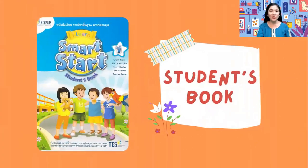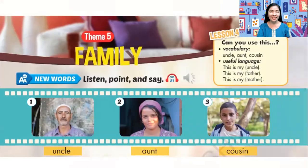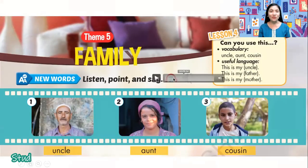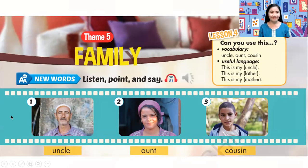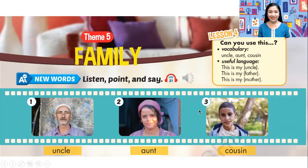Take out your student's book and open it on pages 52 and 53. Listen very carefully and we are going to say it again. Theme 5, Family, Lesson 4. New words — listen, point and say. 1. Uncle. 2. Aunt. 3. Cousin. Great.